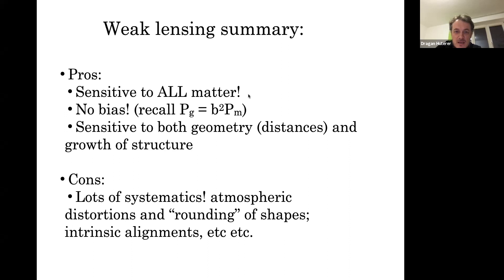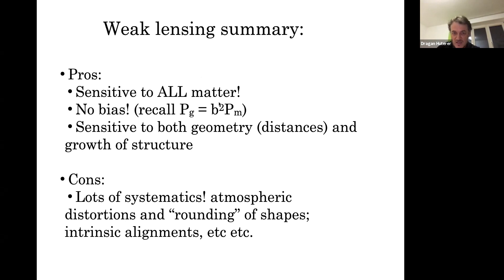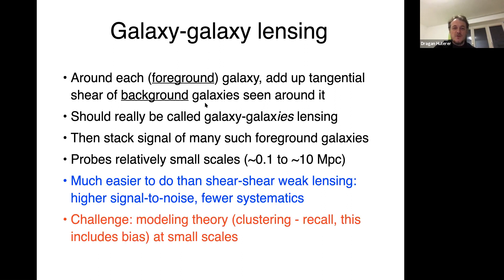Galaxy-galaxy lensing is one of the worst names in cosmology — it took me 10 years to understand what people were talking about. If you take one foreground galaxy and look at the galaxies behind it, their shear will tend to be tangential due to the over-density. So you correlate the position of foreground galaxies with the shapes of background galaxies. This should really be called galaxy-galaxies lensing, but it's unfortunately named galaxy-galaxy lensing. The word 'bias' is also overused: in cosmology, bias specifically refers to the B term multiplying over-density in the galaxy power spectrum, not a qualitative preference.